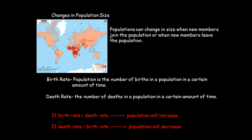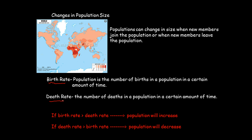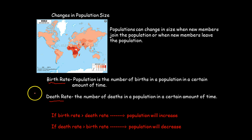A very important term is birth rate — the number of births in a population in a certain amount of time. The opposite is the death rate, which is the number of deaths in a population in a certain amount of time. If an organism is having a lot of births, the population is going to go up. If there are a lot of deaths, whether from sickness or something else causing decline, we'd say the death rate is high.